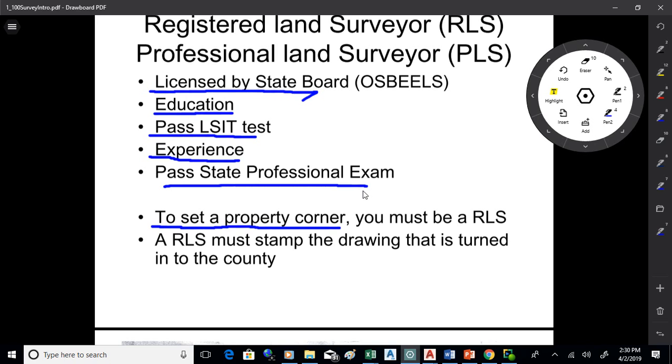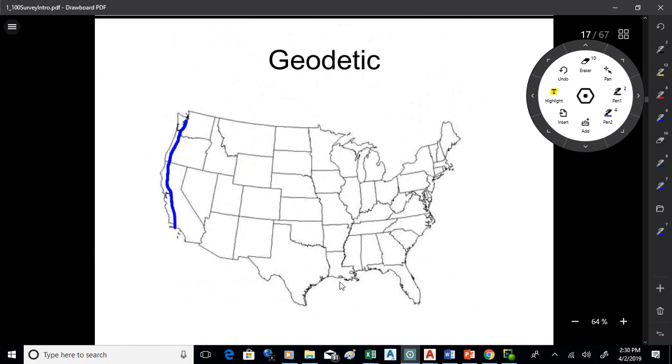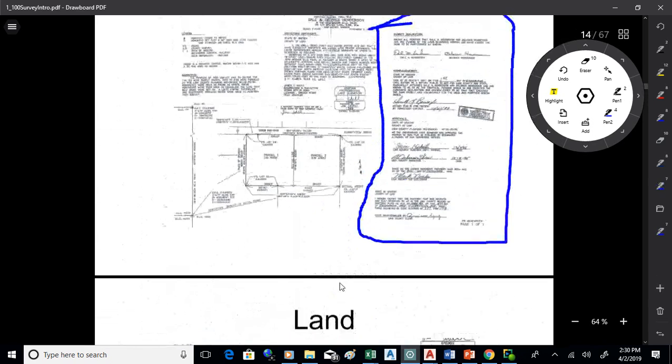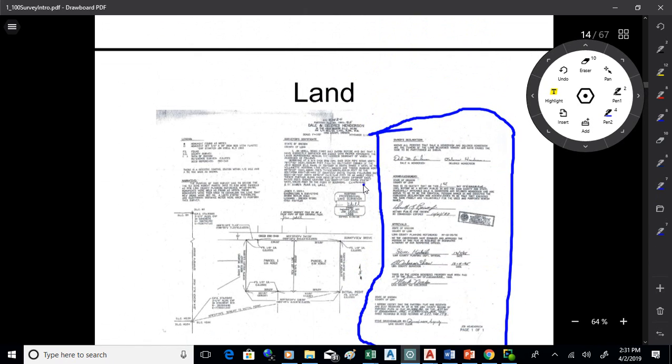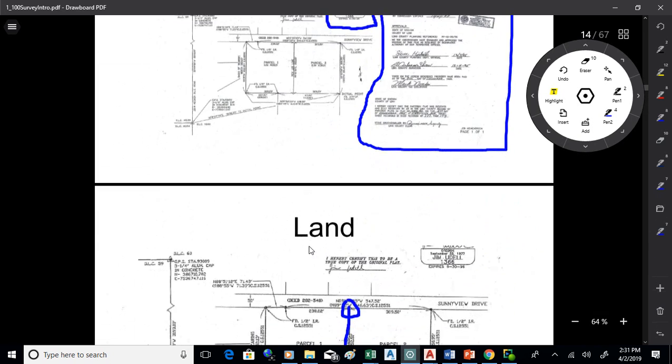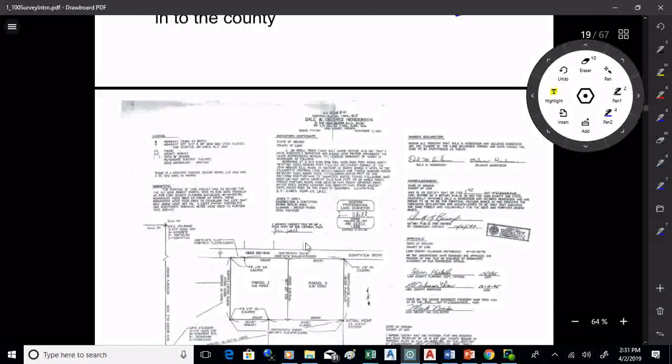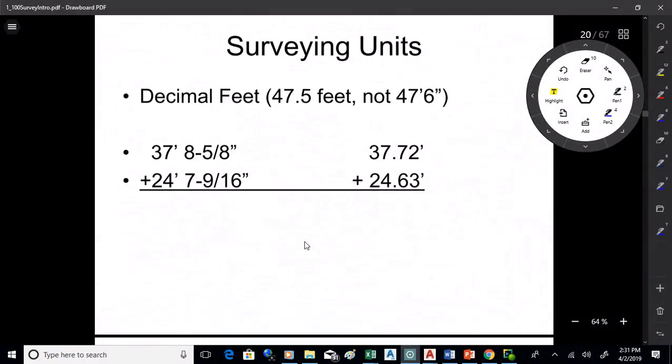You can get the required education through OSU if you get an engineering degree and take a certain number of surveying credits. There's also OIT, which is here in the state, which has a full surveying degree. It's now called geomatics is the term for that. A registered land surveyor has to stamp the drawing that is turned into the county. For the county to accept this drawing, it had to be stamped right there by a registered land surveyor.